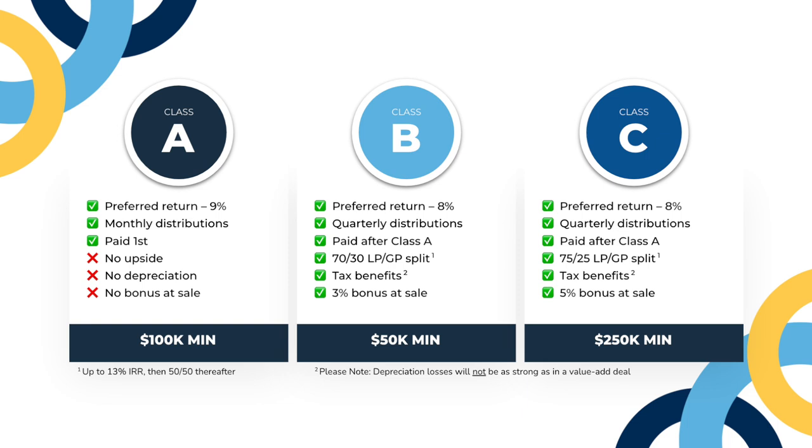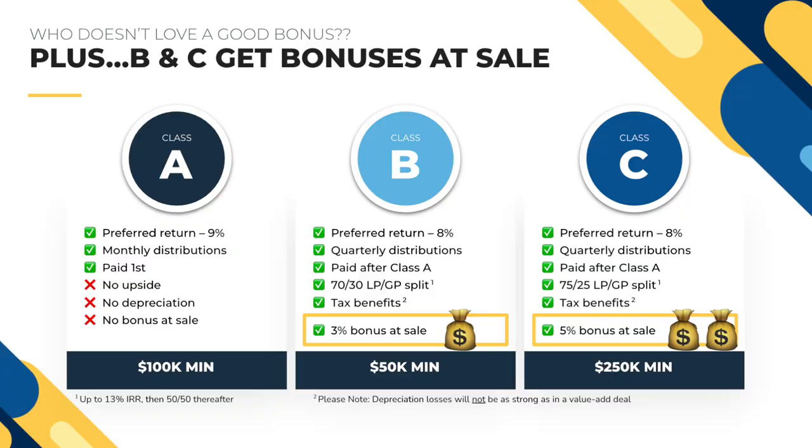Looking at Class B and C, you can see the LP/GP splits — 70/30 for Class B and 75/25 for Class C. Class B has a floor of $50,000 and Class C has a floor of $250,000. When you take into account the preferred return of 8% in both classes plus the profit sharing splits, you have a higher IRR and higher average annual return compared to Class A. Both of these classes have quarterly distributions, and you are sacrificing some priority and a bit of that preferred return in exchange for that upside.